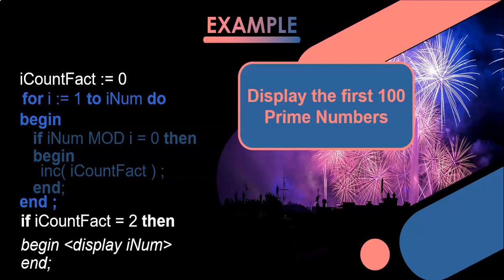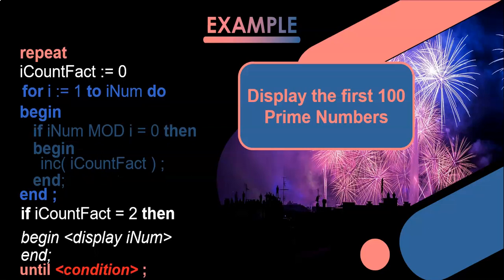What happens if we want to display the first hundred prime numbers? We want to do this code for one, then two, then three, then four, then five — is five a prime number? Is six? Is seven? We're going to keep doing this until we get to a hundred prime numbers. I don't know what the hundredth prime number is, so I don't know how many times we do this loop, so we're going to use a conditional loop.